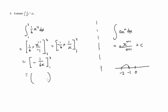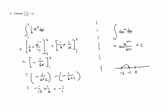Plug in x equals 2, plug in x equals 1, and take the two things away. We've got negative 1 over 12 minus negative 1 over 6, which gives negative 1 twelfth plus 1 sixth. Thinking in terms of twelfths: negative 1 twelfth plus 2 twelfths equals 1 twelfth.